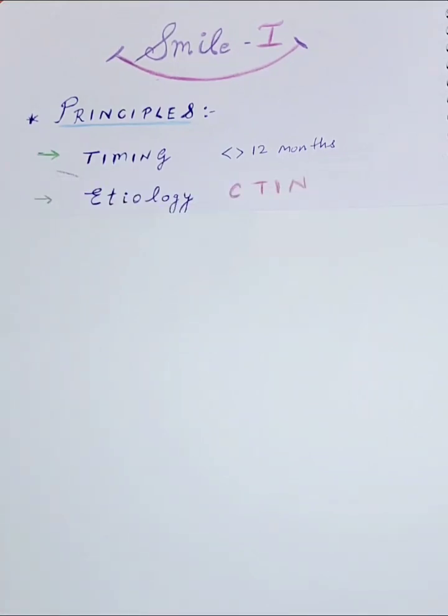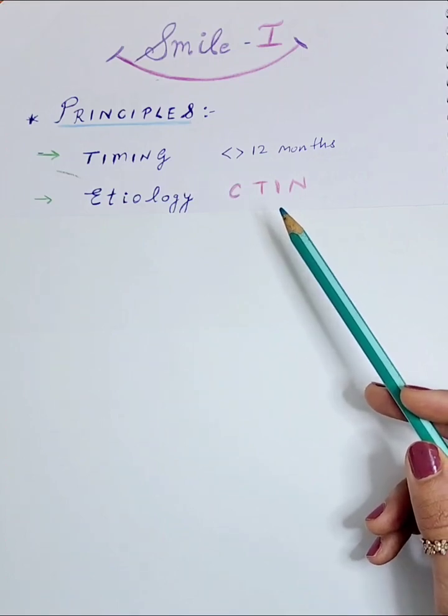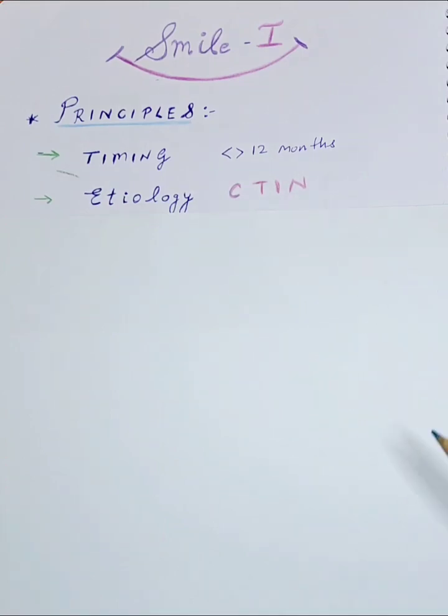After that, we have the etiology. We should obviously know the cause of the facial palsy: whether it was congenital, traumatic, inflammatory, or neoplastic - CTIN.